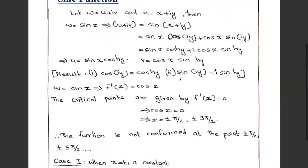Next we move on to the conformal mapping of the sine function. Let w equal to u + iv equal to f(z) where z equal to x + iy. Then sin z equal to sin(x + iy) equal to sin x cos(iy) plus cos x sin(iy), giving the real part u equal to sin x cosh y and imaginary part v equal to cos x sinh y.